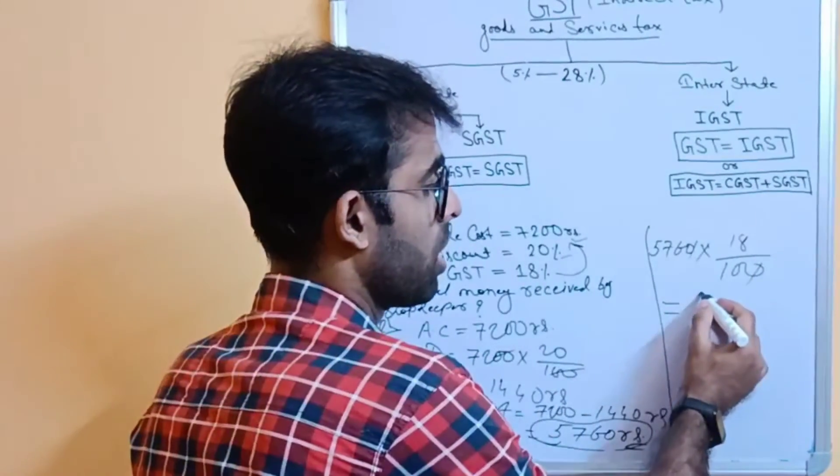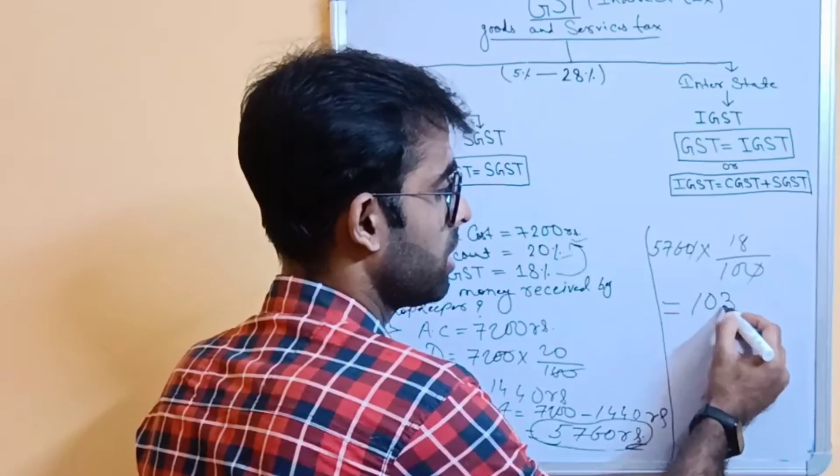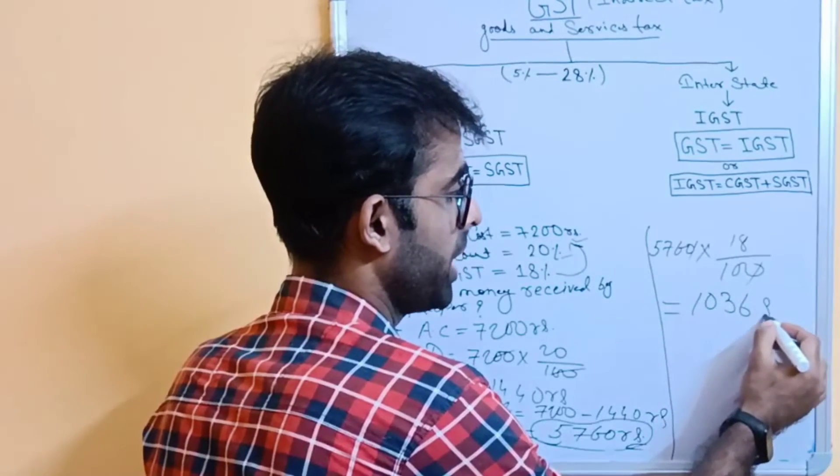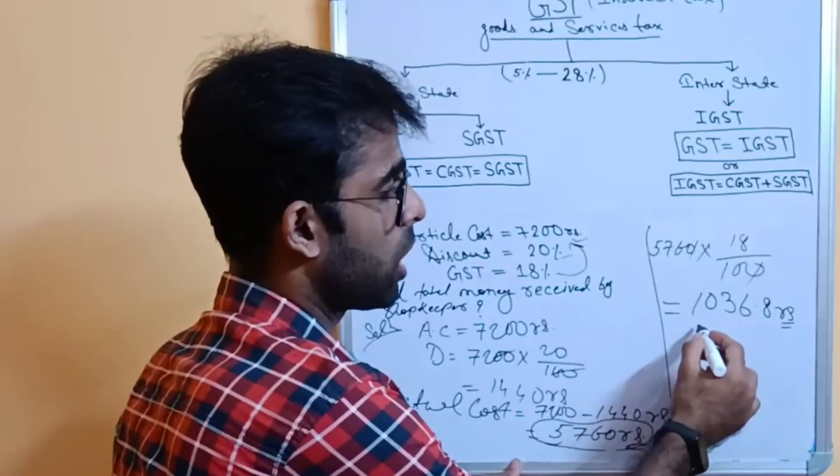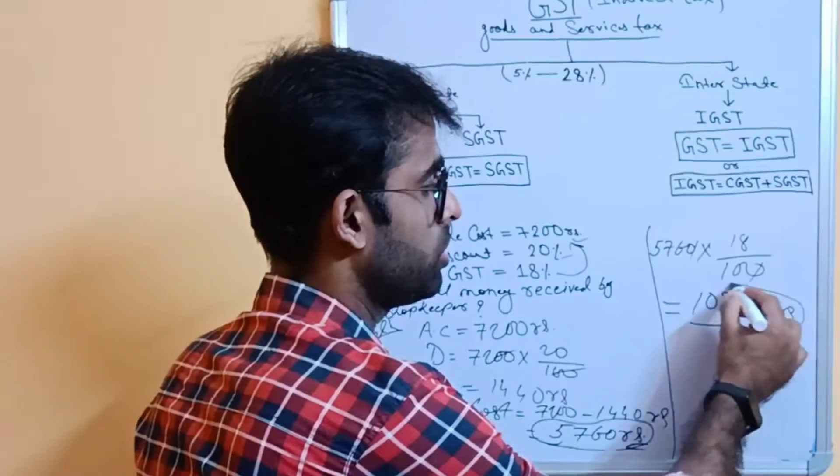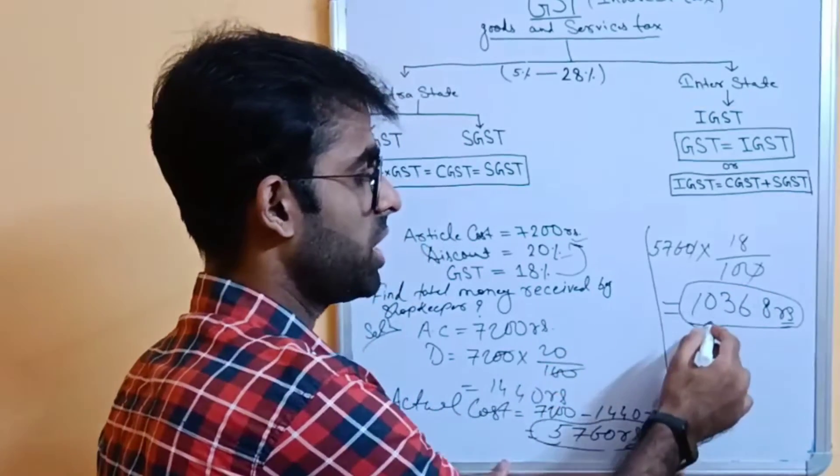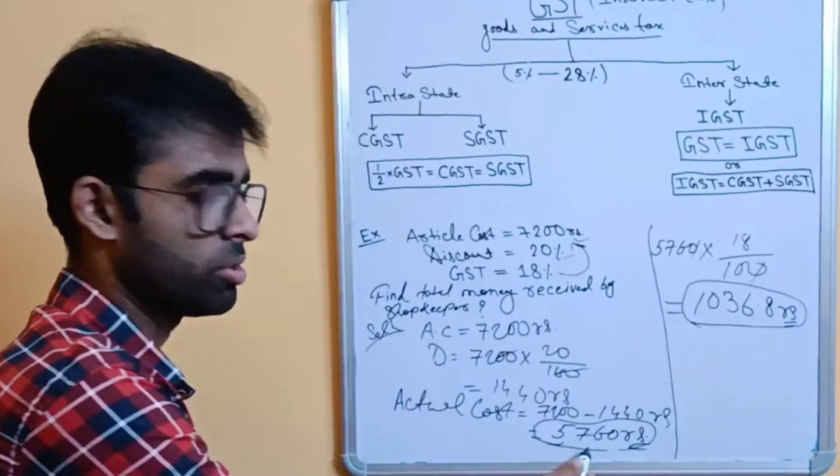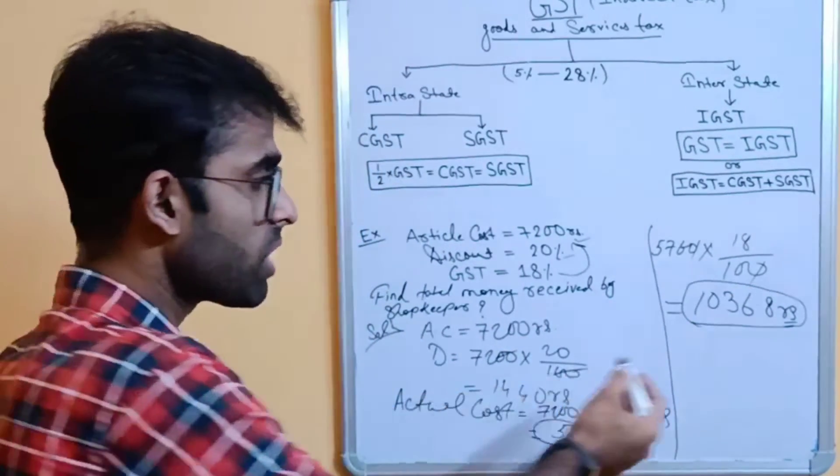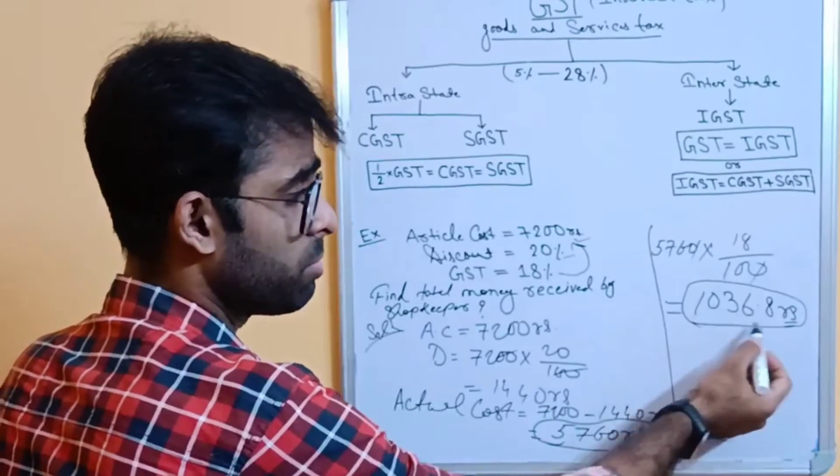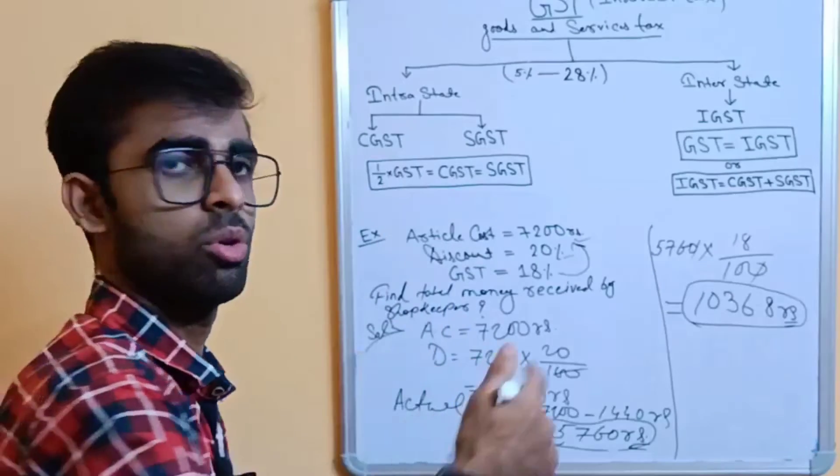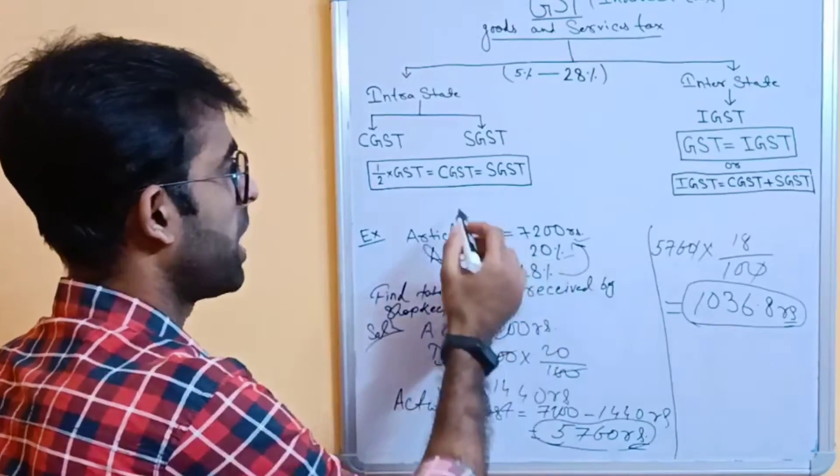1036.80 rupees. If you calculate, 1036 rupees is your GST amount, which is 18% of the actual cost of this price. And, again, if we divide this part in 2 equal parts...